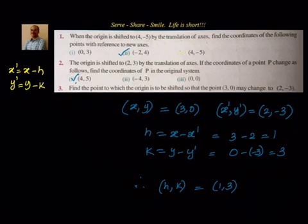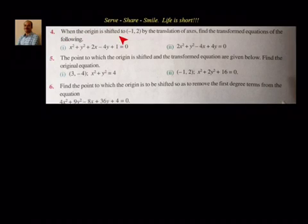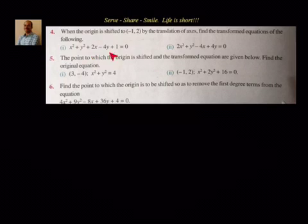Now let's look at more problems. Till now we have looked into points. Now let's understand: suppose there is an equation of a curve and when the origin is shifted from (0, 0) to another point, how the equation of the curve will change. We will do a couple of examples on that. When the origin is shifted to (-1, 2), that is h, k is (-1, 2), by the translation of axis, find the transformed equations of the following.